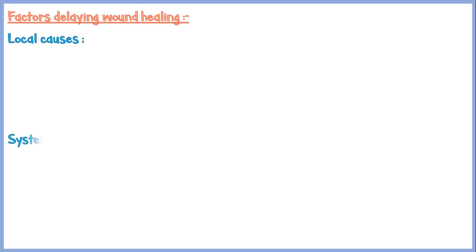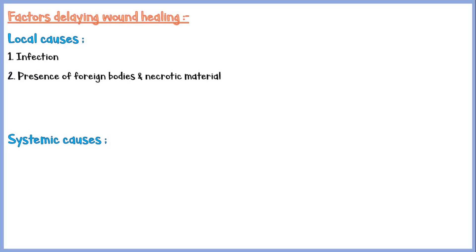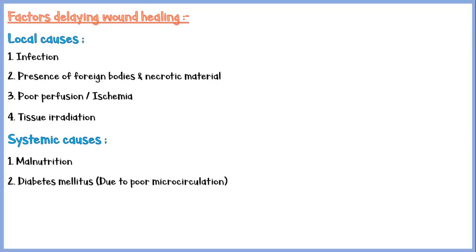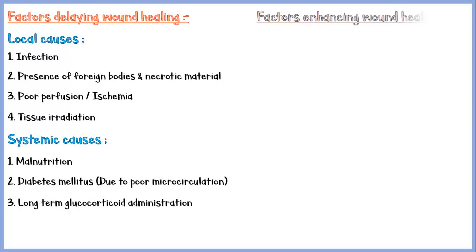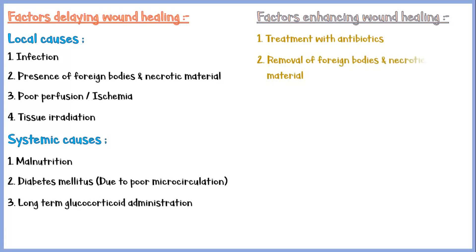Factors that delay the healing of wounds can be local or systemic. Local causes include infection, presence of foreign material and necrotic debris, poor perfusion and ischemia, and tissue irradiation. Systemic causes include malnutritional status, diabetes mellitus which causes defects in microcirculation, and long-term administration of glucocorticoids. Factors that enhance wound healing include treatment with antibiotics to control infection, removal of foreign body and necrotic material, suturing, and skin grafting.